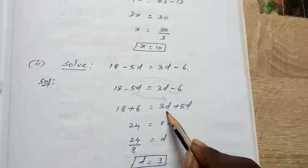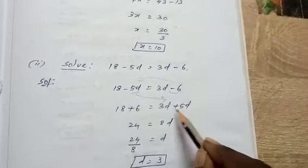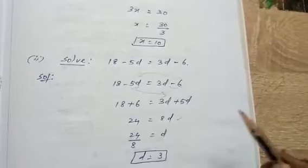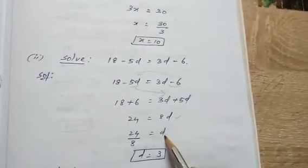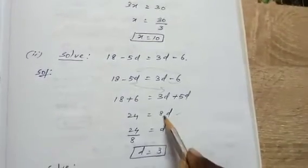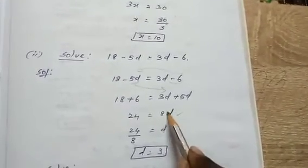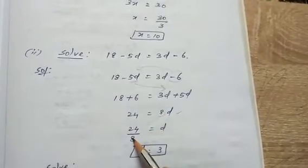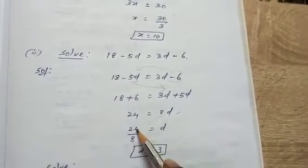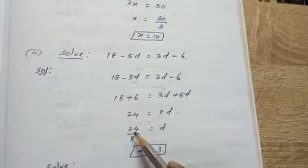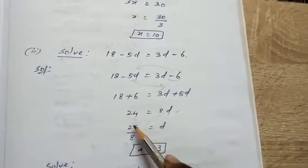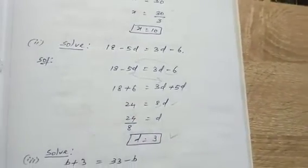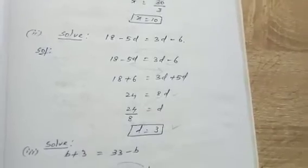The right hand side is 3d + 5d = 8d. So 8d = 24. To find the value of d, we divide both sides by 8: 24 divided by 8 equals 3. So the solution is d = 3.